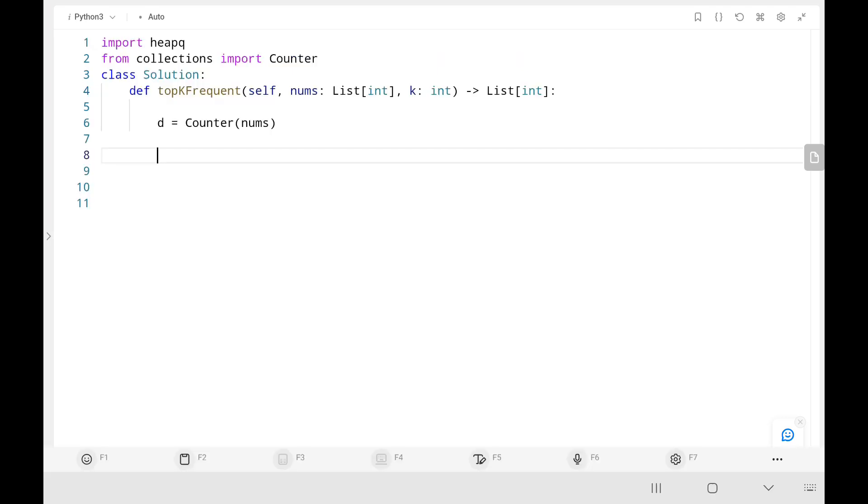So initially, I will create a dictionary where I will be keeping the number and the number of times it has been repeated. So here I am using counter function to do that task. Then I will be creating a heap list. I will be appending the count by adding the negative sign and the value.